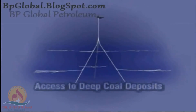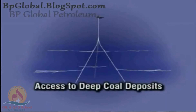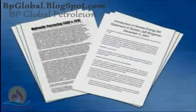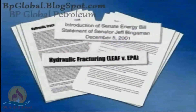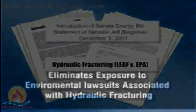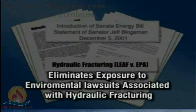This system has the added advantage of providing access to coal deposits below 5,000 feet, which are estimated to hold more than 50% of the gas reserves in many major coal bed methane gas regions. Virtually every environmental concern about hydraulic fracturing raised in both the Bingaman Bill and LEAF versus EPA are solved by this process.